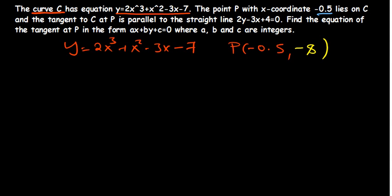To help you understand, let me sketch a simple curve. We have a curve and a point on it. The point P has coordinates negative 0.5 comma negative 8, which we've already found. This point P lies on the curve C.